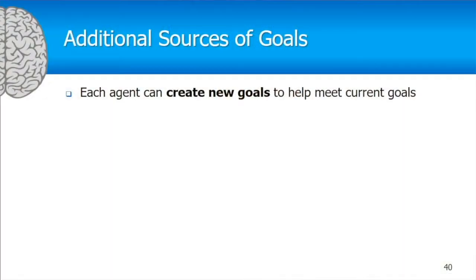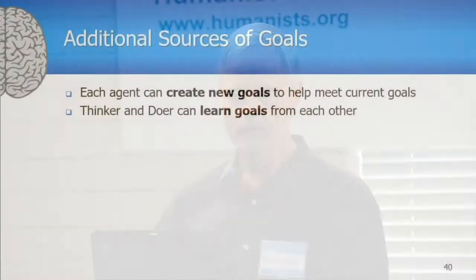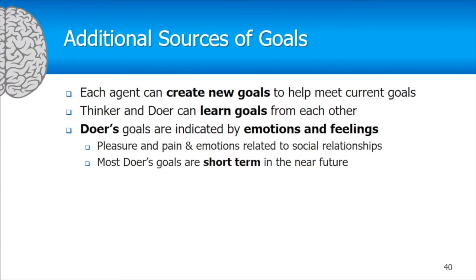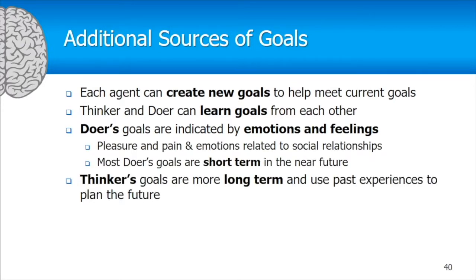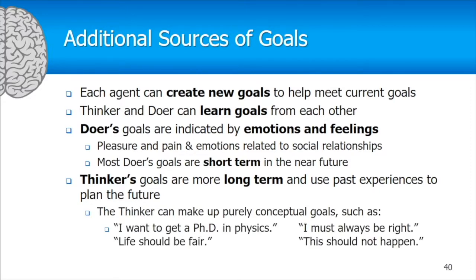Each agent can create new sub-goals to help meet current goals — for example, to get a PhD in physics there were many sub-goals to build out. The thinker and doer can learn goals from each other, so the thinker can learn to be prosocial from the doer. The doer's goals are indicated by emotions and are mostly short-term, while the thinker's goals are more long-term. The thinker can also make up purely conceptual goals, such as 'I want to get a PhD in physics' or 'I must always be right.'